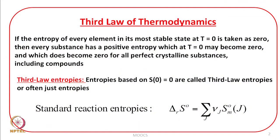How do we get standard reaction entropies? Standard reaction entropies can be calculated from the expression: delta r S naught equals summation over j of nu_j times S_m naught of species j, where j is the species and nu_j is the stoichiometric coefficient. The subscript r signifies reaction — many books write r, many do not, so do not get confused.